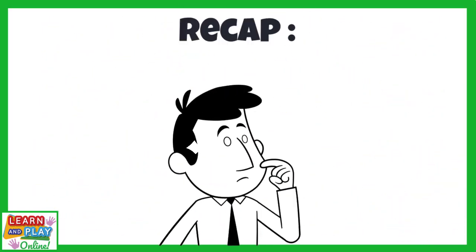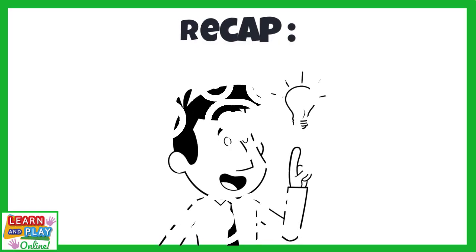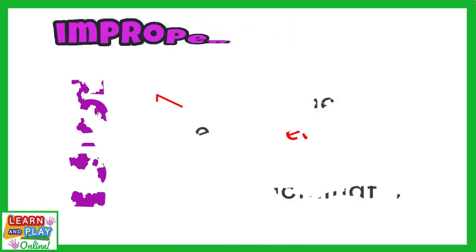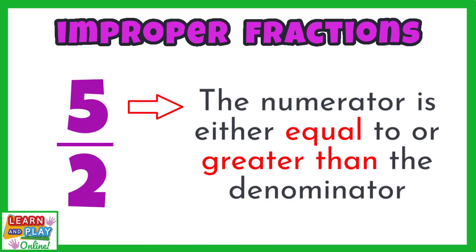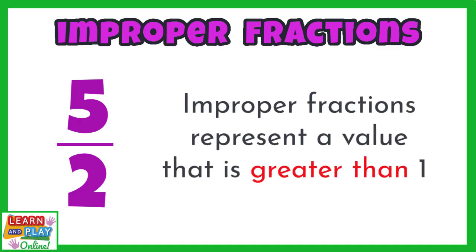First, let's quickly recap what we know about improper fractions. Improper fractions have a numerator that is either equal to or greater than the denominator. Improper fractions represent a value that is greater than 1.